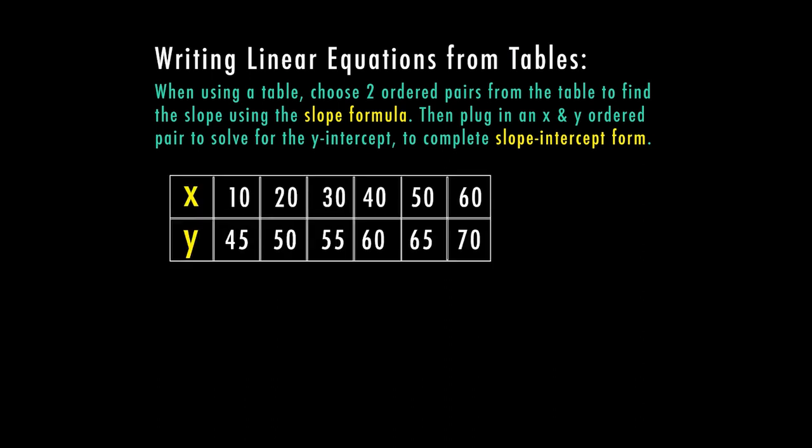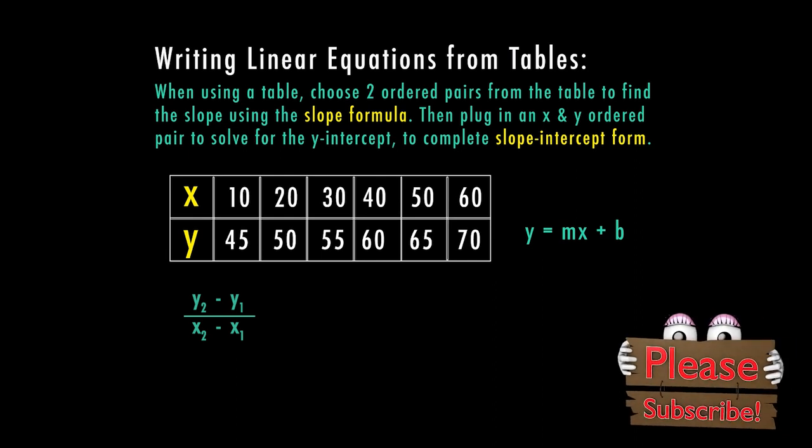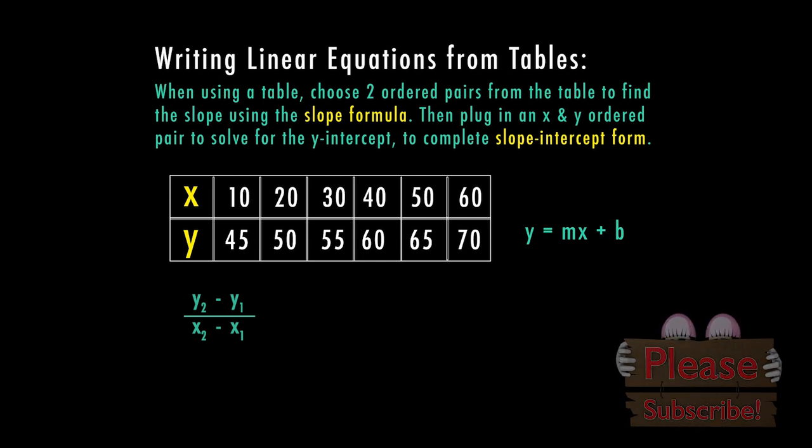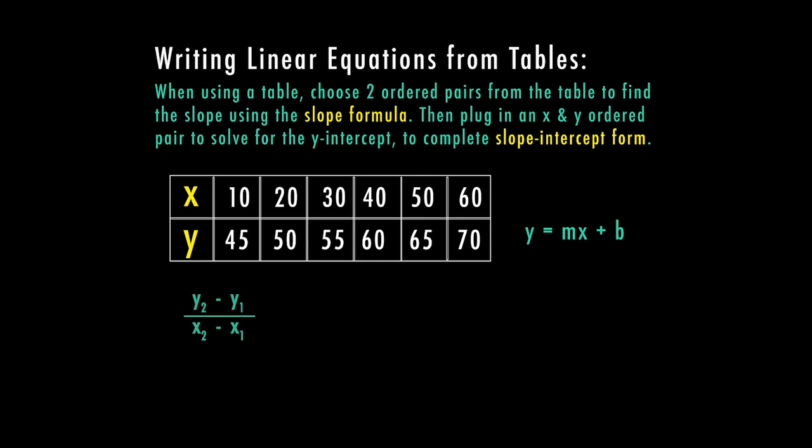So let's first look at our table here. We have our x's and our y's, and if you notice, it doesn't start at zero or one for the x or the y. But we can use our formulas to figure out what our slope is, and then we're going to use that to find our y-intercept. So here we have 10 and 45, 20 and 50, 30 and 55, and so on. You just have to pick two of those ordered pairs to make your y₁ and your y₂, x₁ and x₂.